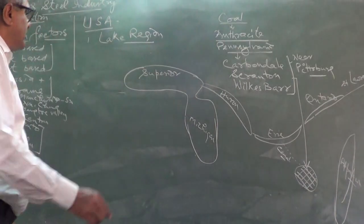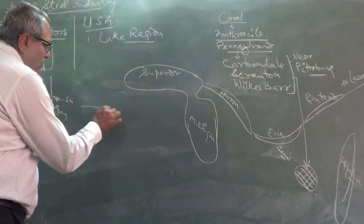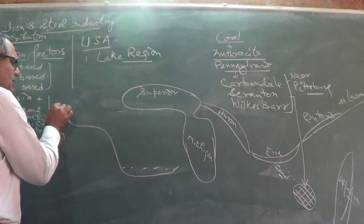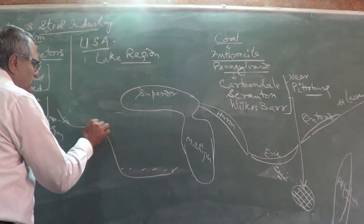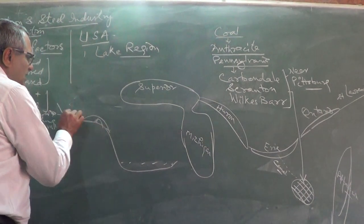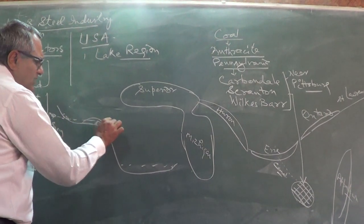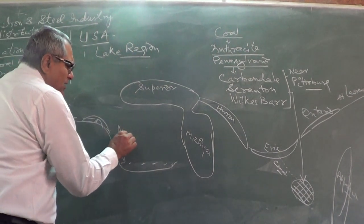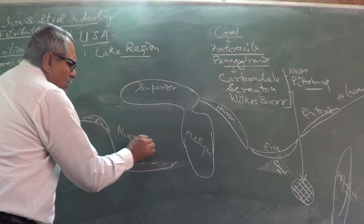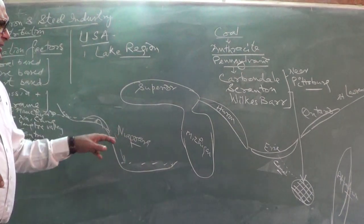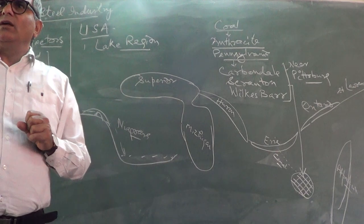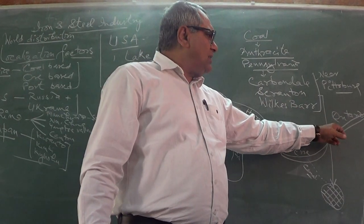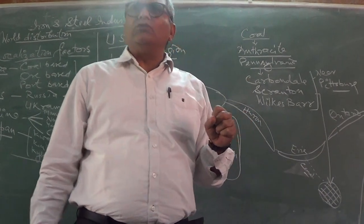Between Lake Erie and Lake Ontario there is a waterfall — the Niagara Falls. The surplus water of Lake Erie falls here into Lake Ontario. But because of this waterfall, ships cannot navigate directly from Ontario to Erie.